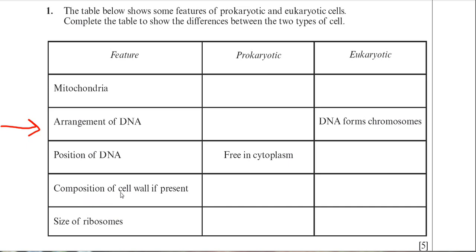The composition of the cell wall, if present: in a prokaryote you have the murein cell wall — the other name for murein is peptidoglycan — so either of those terms would do. For the eukaryote, if it's a plant cell it would be cellulose, or if it's a fungus it would be chitin. The examiner would accept either cellulose or chitin.